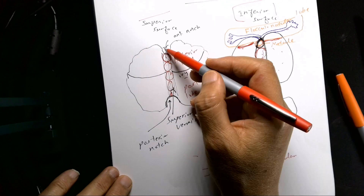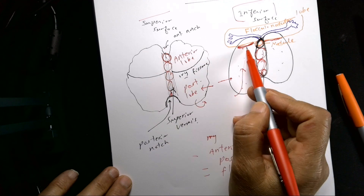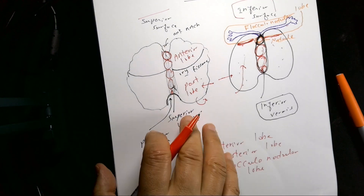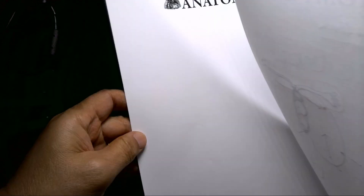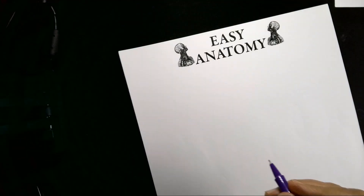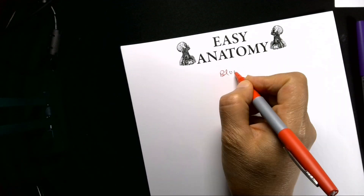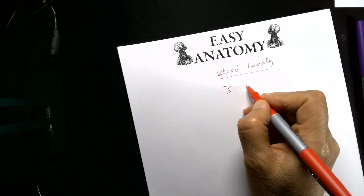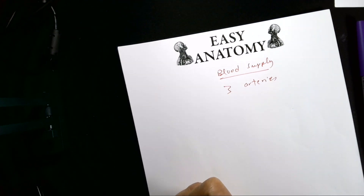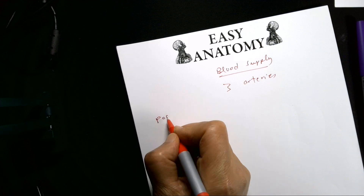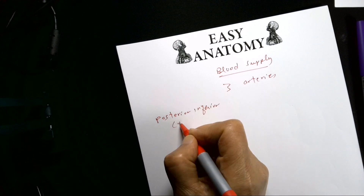Now, how about the blood supply of the cerebellum? The cerebellar arteries include the posterior inferior cerebellar artery, known as PICA.